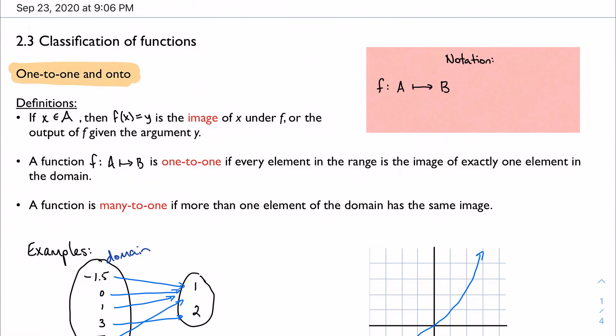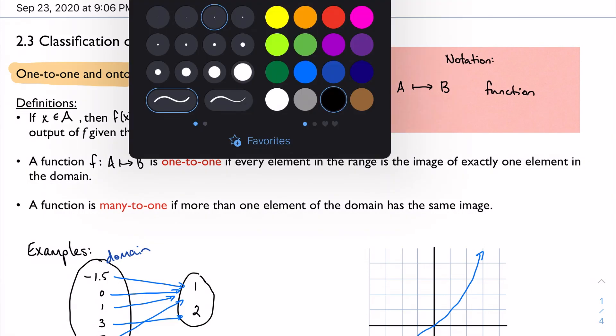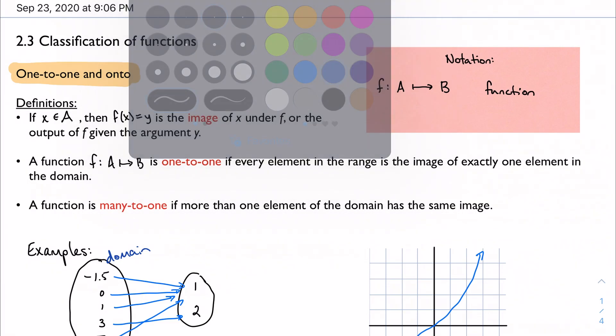Before I do that, I want to talk about a new type of notation that we're going to see, this notation over here in red. This is going to be a new way of defining a function based on the sets that I'm sending numbers to and from.